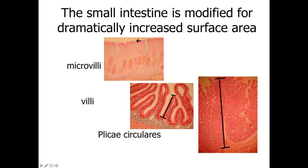The small intestine is important for both digestion and absorption of nutrients, requiring greatly increased surface area. This occurs at multiple levels: at the cellular level with microvilli along the surface; at the mucosal level with villi — finger-like mucosal folds with lamina propria extending into the lumen; and at the submucosal level with plicae circularis — permanent submucosal folds that increase the area for the mucosa, which is further amplified by the villi and individual cell microvilli.